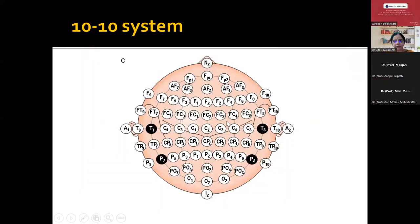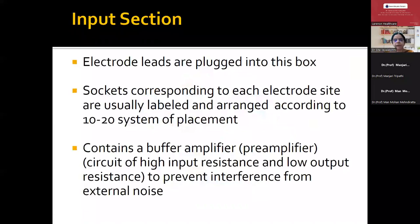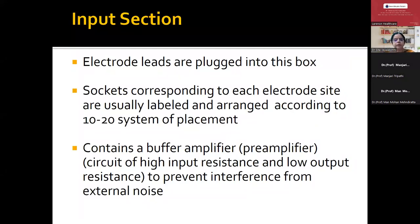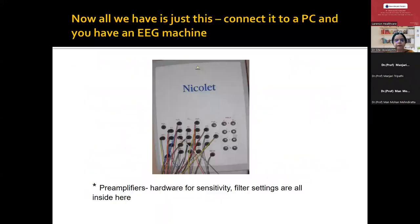There is also a 10-10 system, which most of the time we do not use, where all the electrodes are placed at 10% instead of the initial 10% followed by 20%. Once the electrodes are placed on the skull, we should know about the input section of the head box. The electrodes are plugged into the input section, sockets corresponding to each electrode site are labeled, and the socket contains numbers — so F3 will go into F3, PZ into PZ. It contains a buffer amplifier or pre-amplifier to prevent interference from external noise.